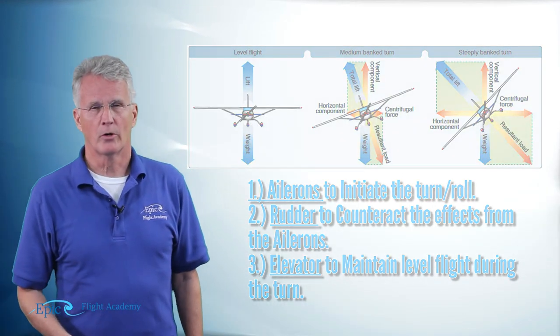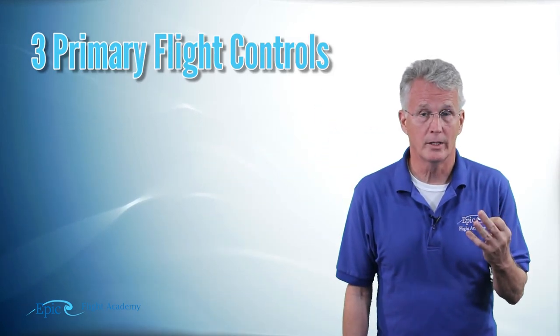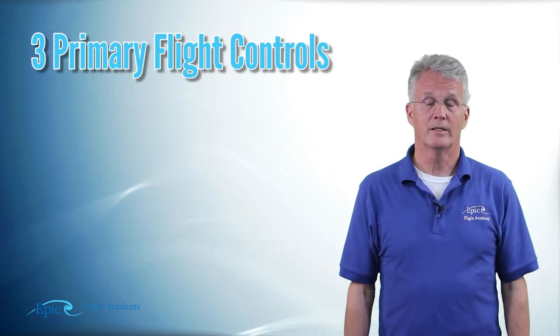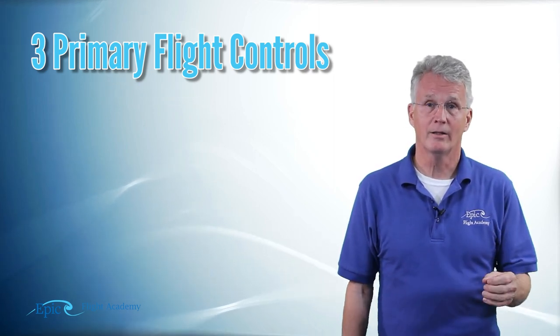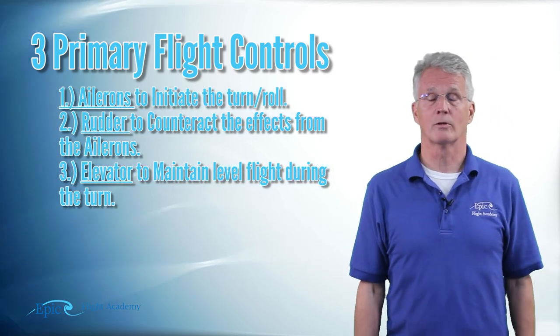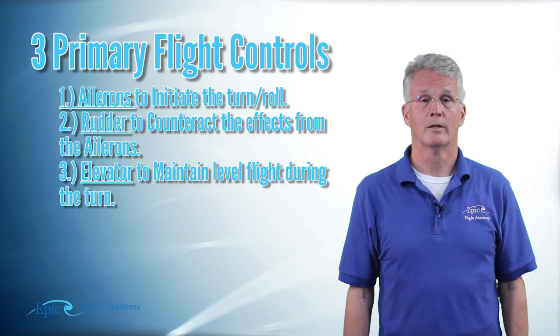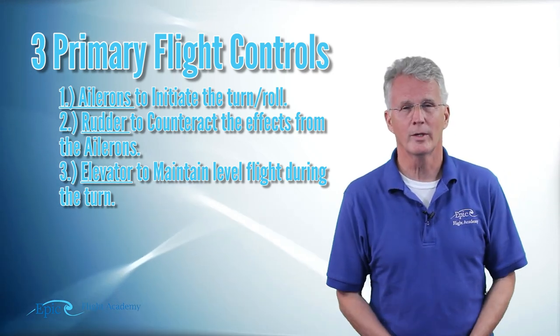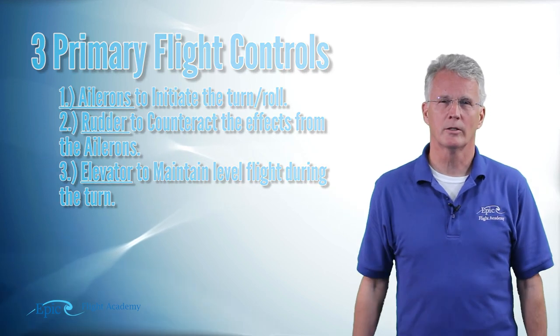But it was the elevators that created that additional lift to give me that horizontal vector. So to turn the aircraft, I have to use all three primary flight controls, and in fact it is the elevator that gives me the horizontal component that causes the airplane to turn. Now before we leave this topic, let's talk a little bit about steep and shallow turns.